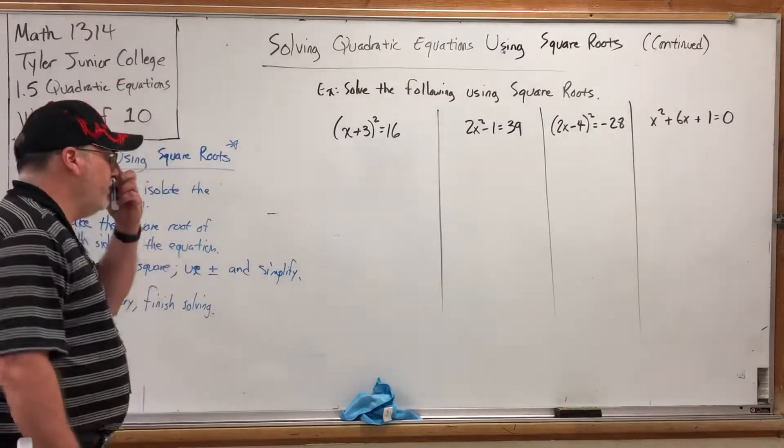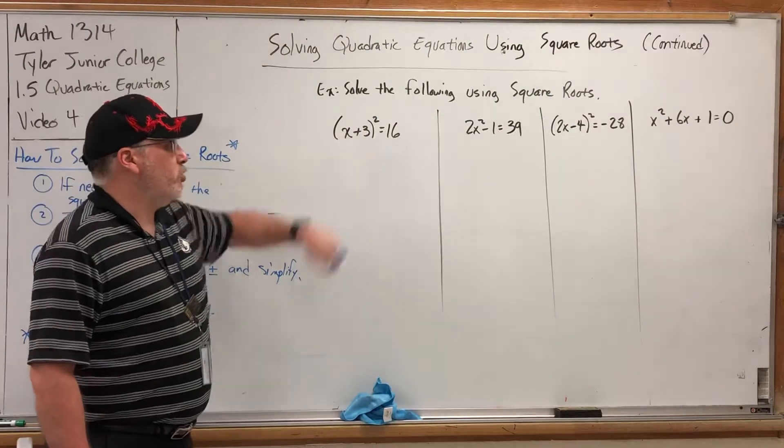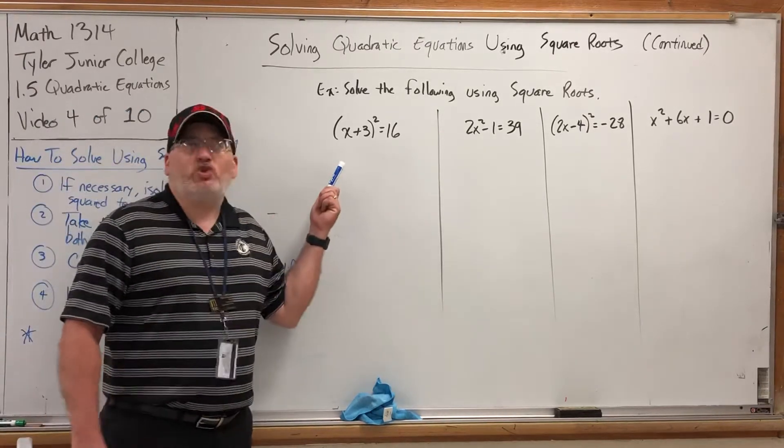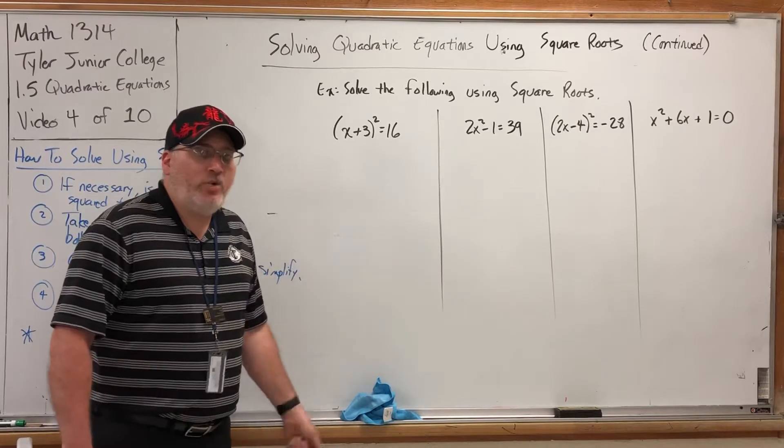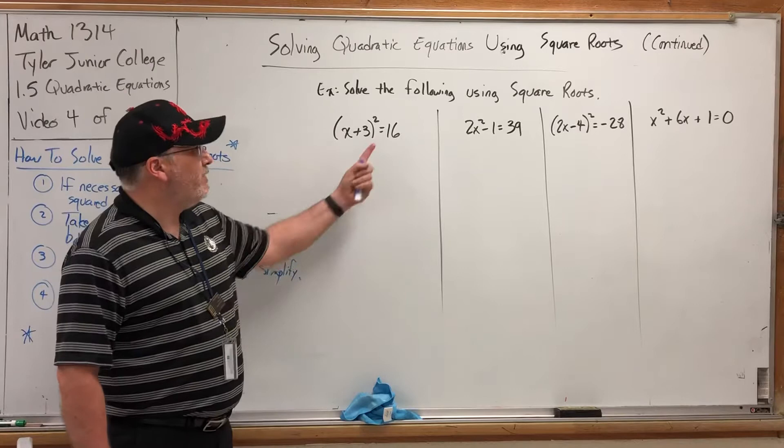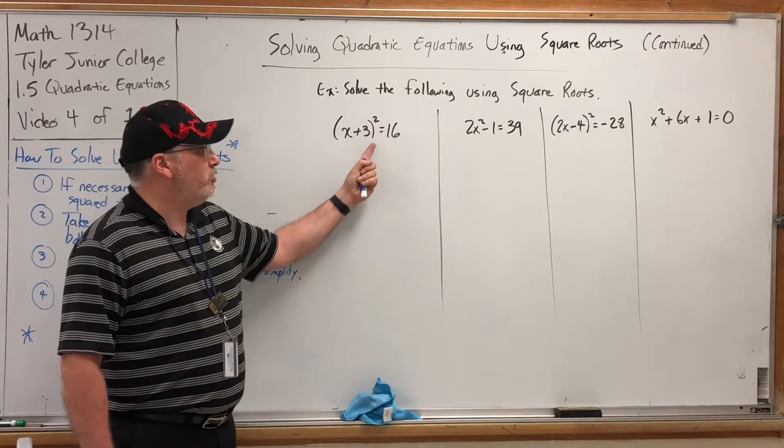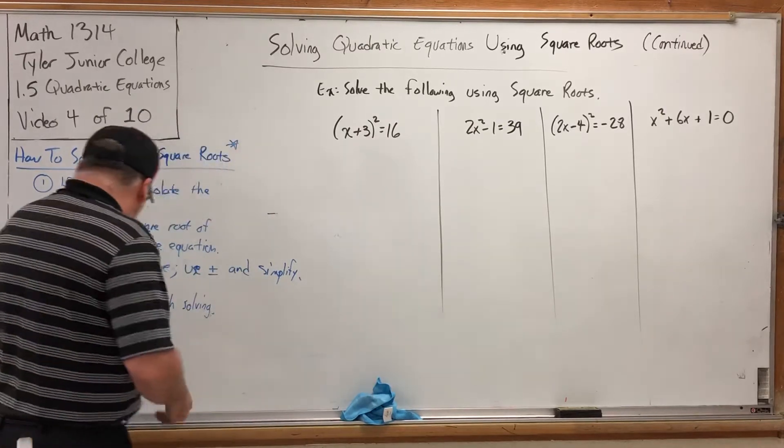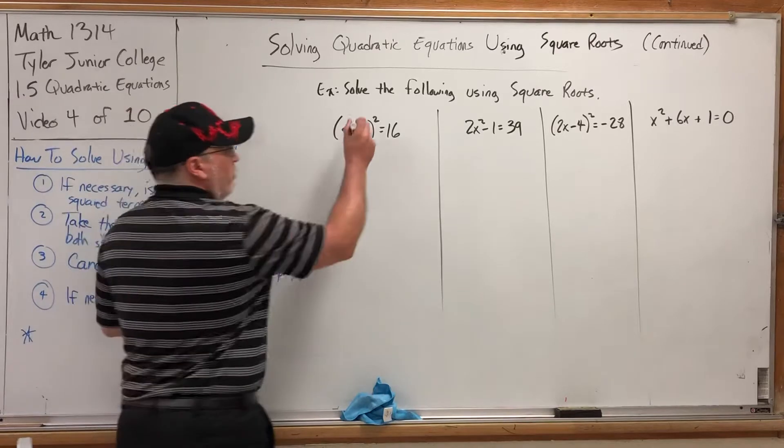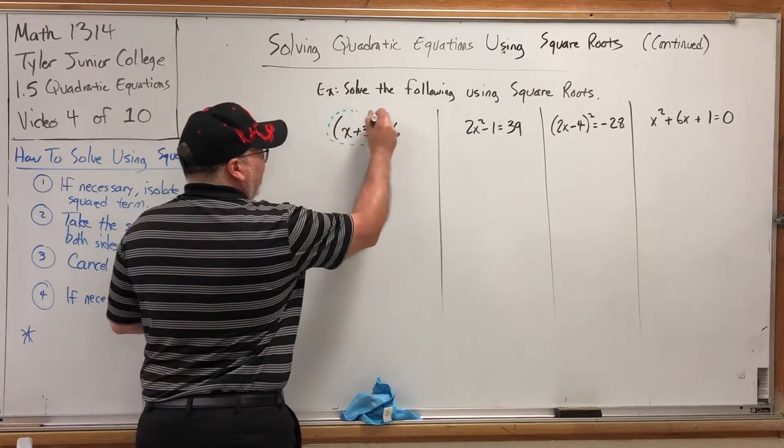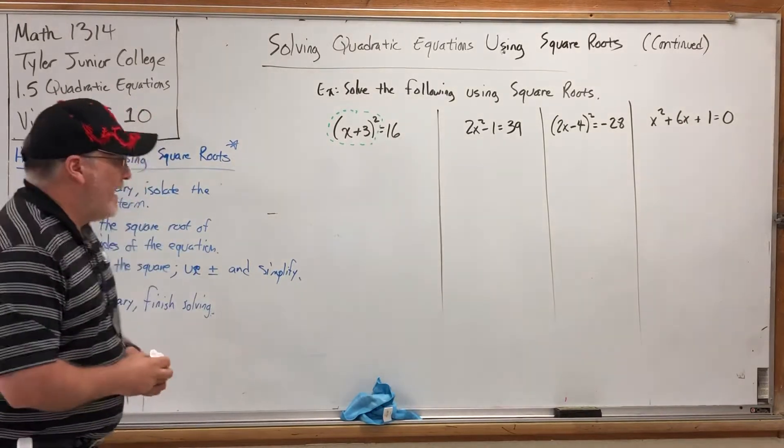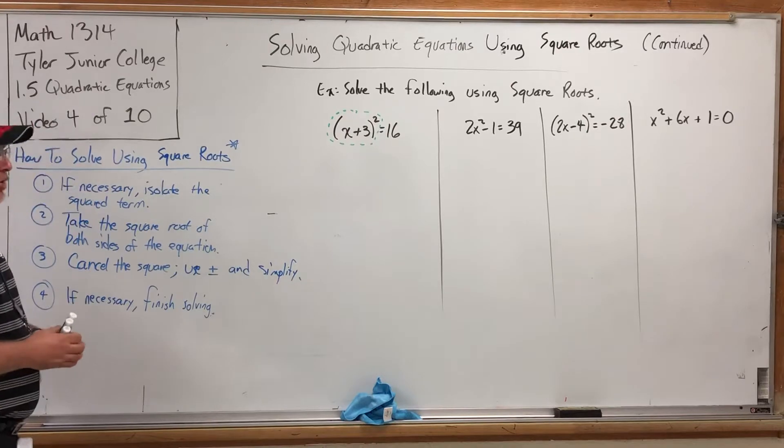Let's start with the first one. Solve the quantity (x+3)² = 16. Let's use our approach. Number one, if necessary, isolate the square term. Who has the square here? The answer is always whatever is immediately to the left of it. The square belongs to the parenthesis and all of its contents. I don't have to do step one on this first example because the square term is already isolated.